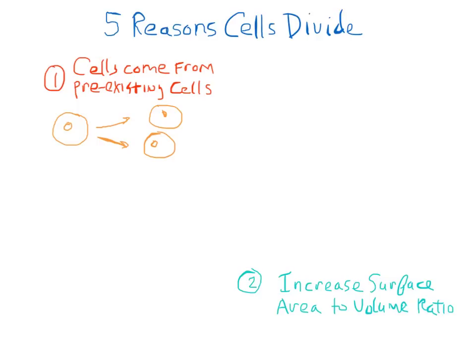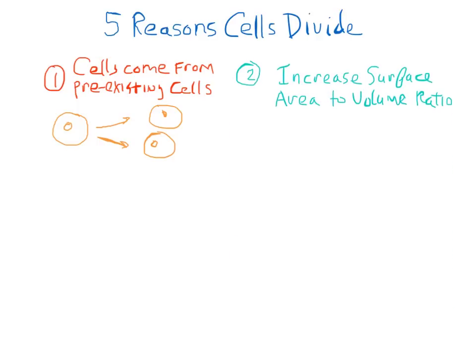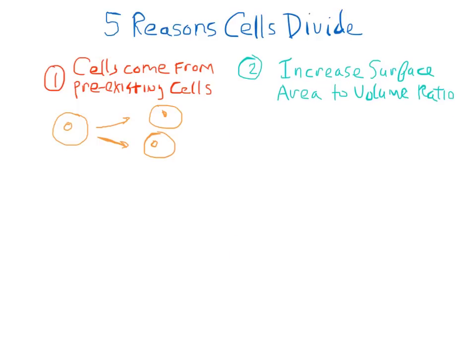The second reason cells divide is that they need to remain tiny so they can increase the surface area to volume ratio. A big fat cell would not be very efficient at absorbing nutrients or eliminating waste.